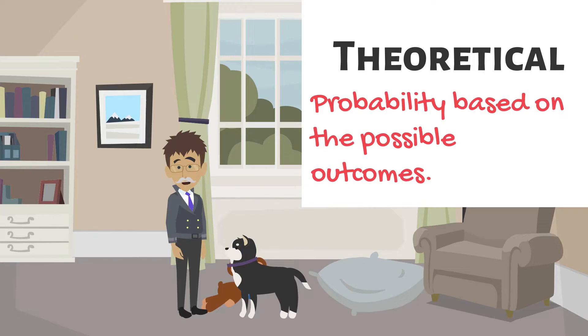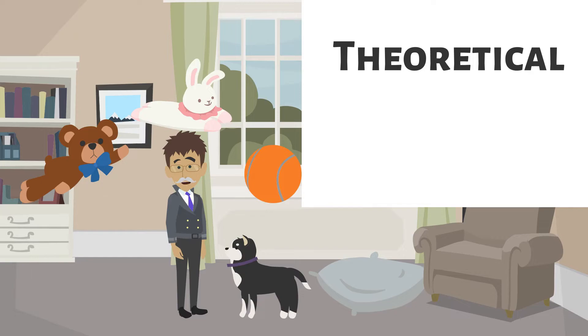It is generally thought to be what is expected based on the possibilities. Random has three toys, bear, bunny, and her ball. She selects a toy randomly. The theoretical probability of her selecting bear is 1 over 3 because there is one toy we are paying attention to and three possible outcomes.